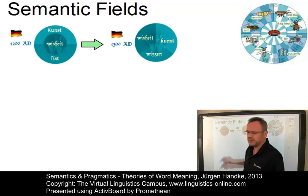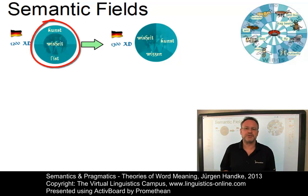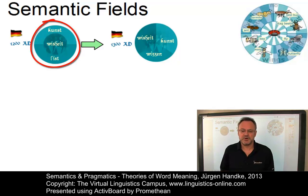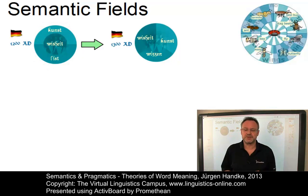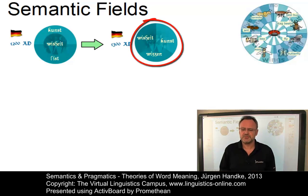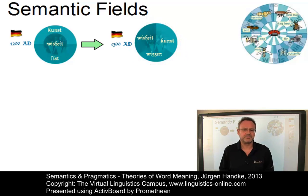This example is from German, where around 1200, Wiesheit — Wisdom — was the head term of the field of intellectual activity. At around 1300, however, it became a member of a slightly modified field.